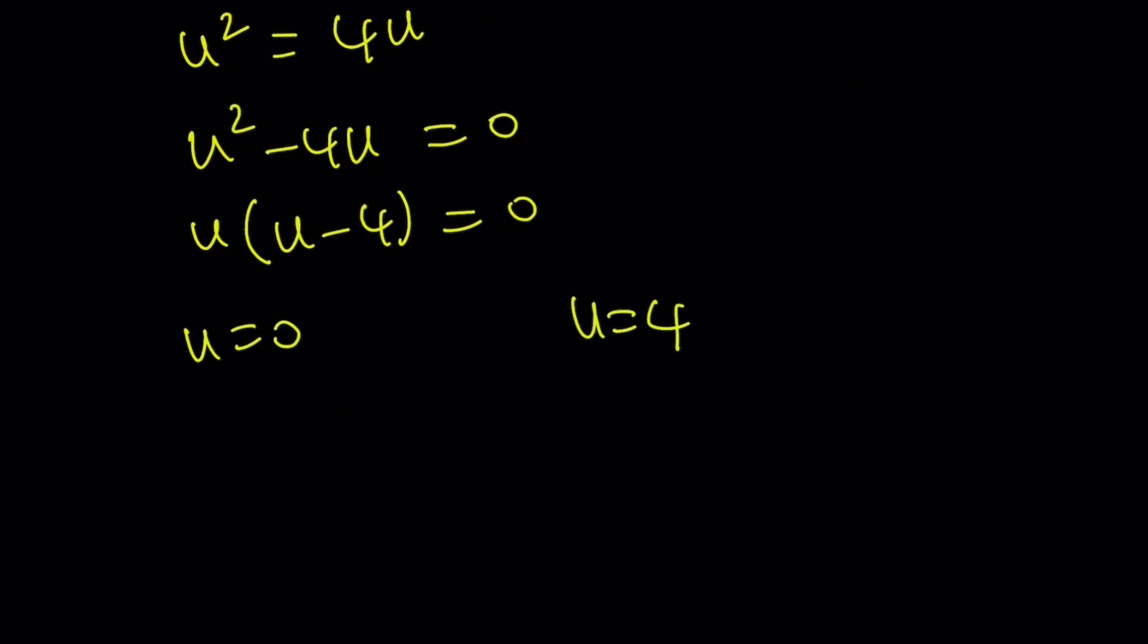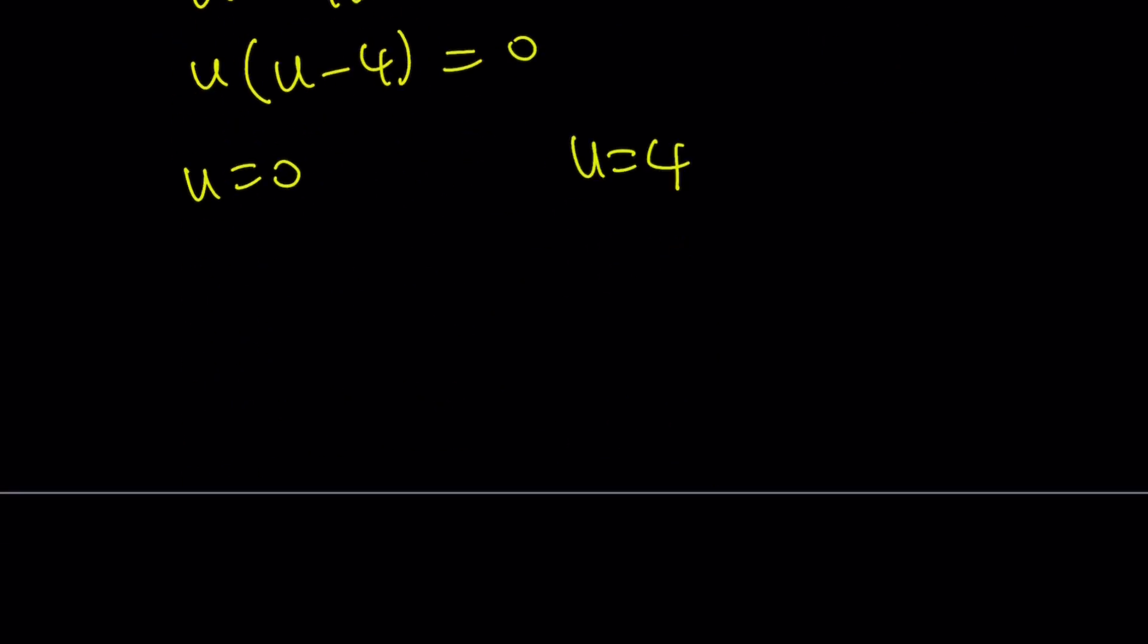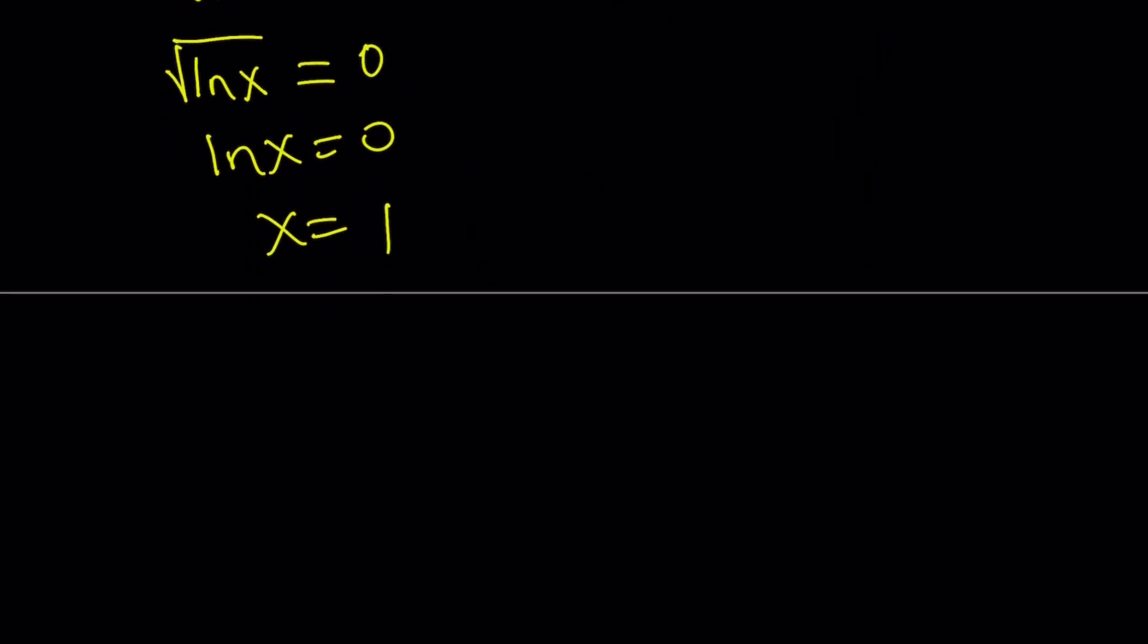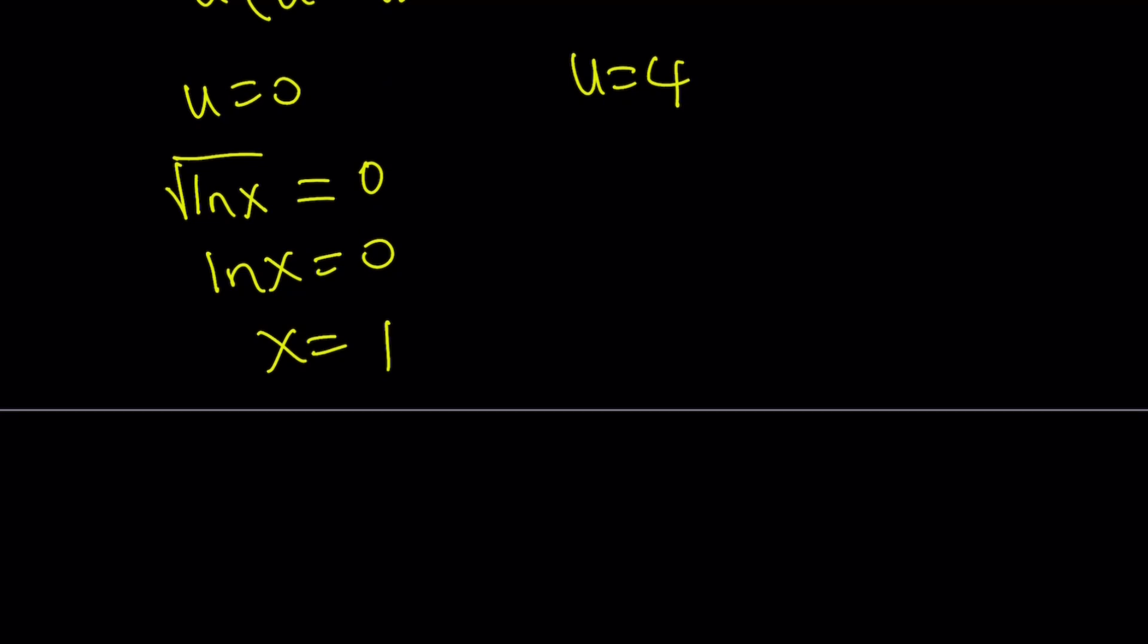But you can remember what u is, right? u is square root of ln x. So let's go ahead and back substitute. If square root of ln x is 0, that means ln x is equal to 0, which means x is equal to 1. But remember, x must be greater than 1. That was one of the requirements. So that's not going to be accepted. That solution is invalid.